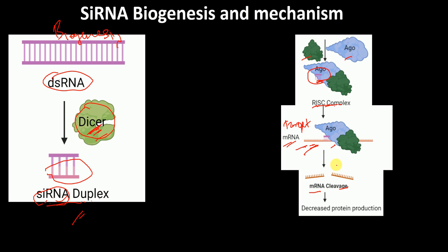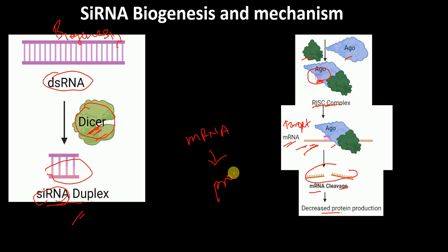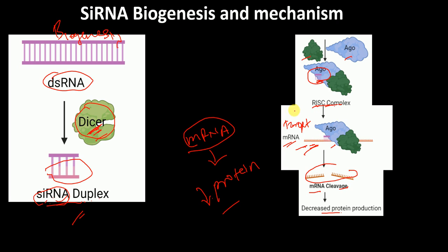When the target mRNA is degraded, the target protein production will be decreased, because protein is produced from mRNA. When the target mRNA is cleaved, the protein production will be decreased. This is how siRNAs, or small interfering RNAs, lead to a decrease in protein production.